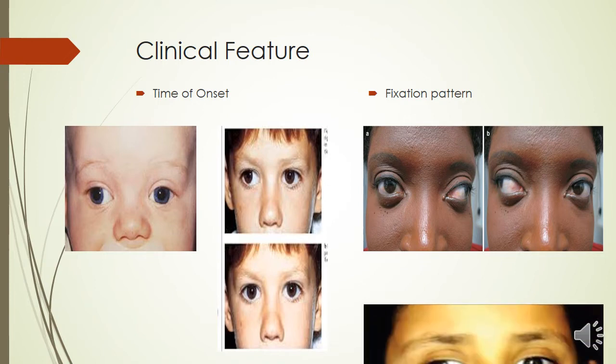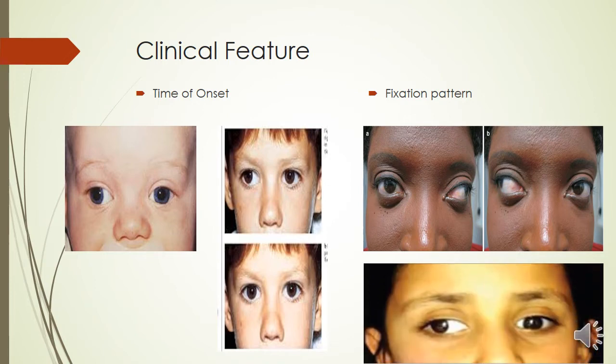The second fixation pattern is unilateral exotropia, where there is a constant unilateral exotropia and the same eye is always used for fixation — whether in right gaze or left gaze. Most of the time, there is a difference in vision between the two eyes, and the eye that is continuously deviated develops amblyopia.